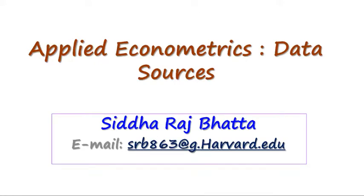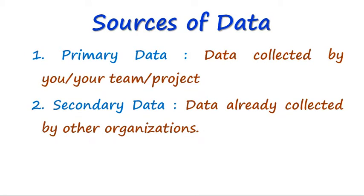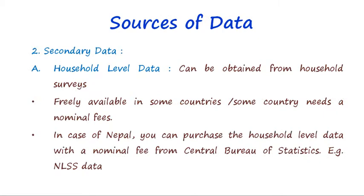In this video I will talk about the data sources for economic analysis. We can mainly use two types of data: one is primary data, which are collected by ourselves or our project team, and the second is data that is already readily available for our use. While primary data should be collected by ourselves, secondary data can be taken from different sources, one of which is social surveys.